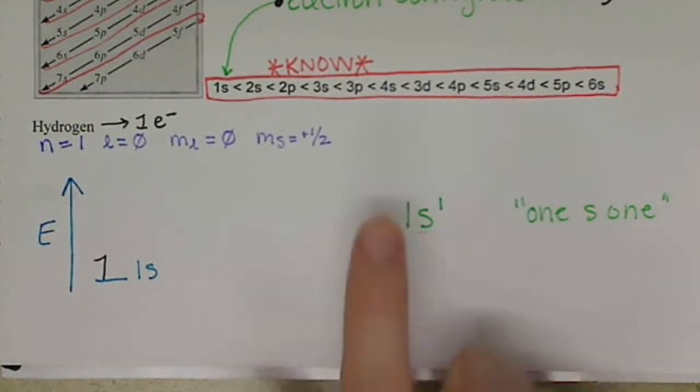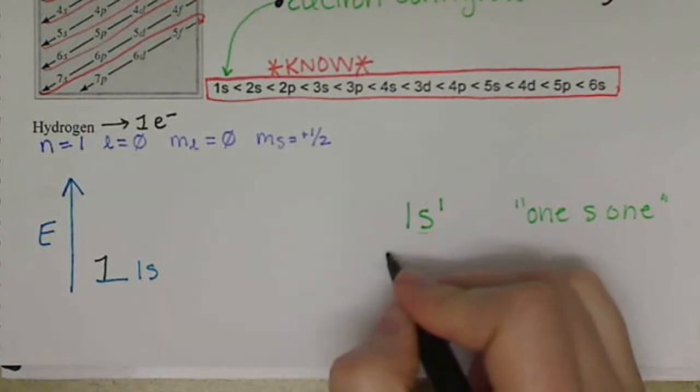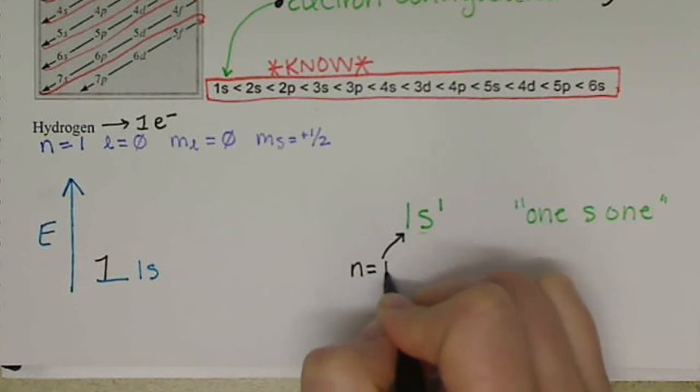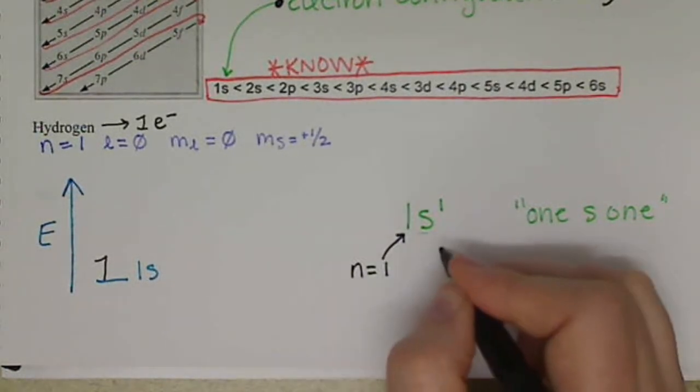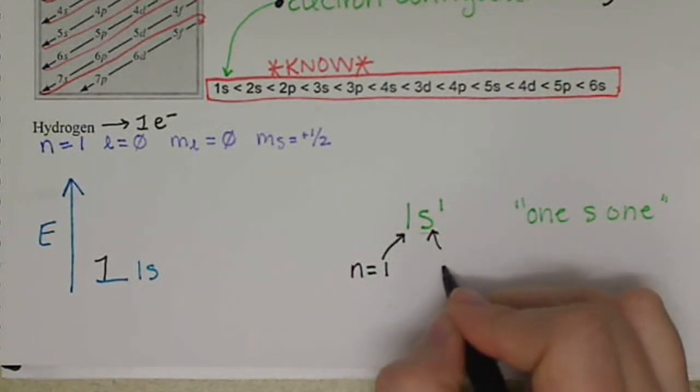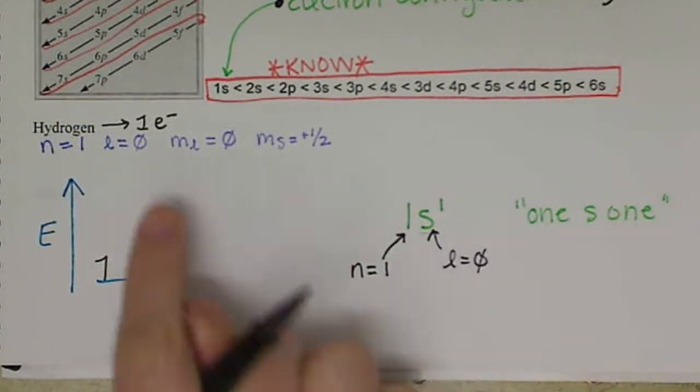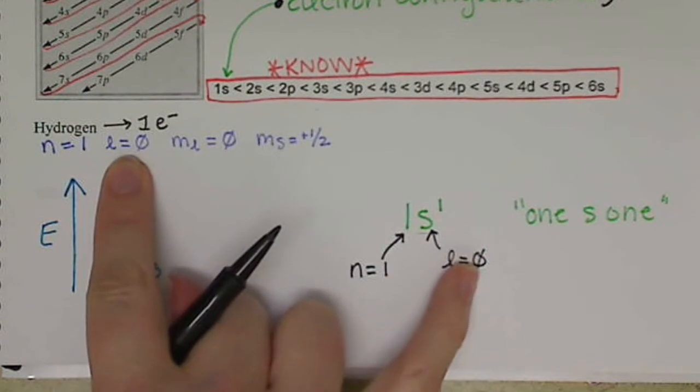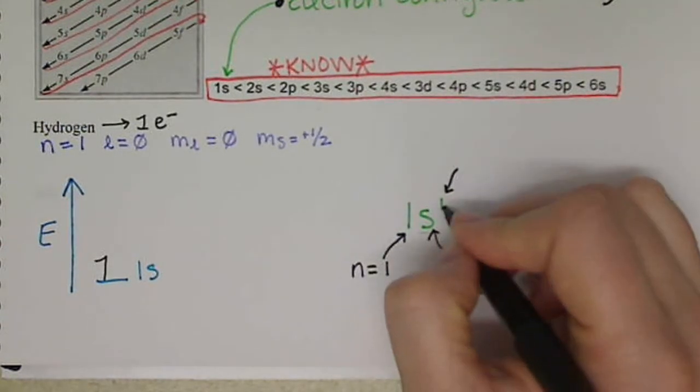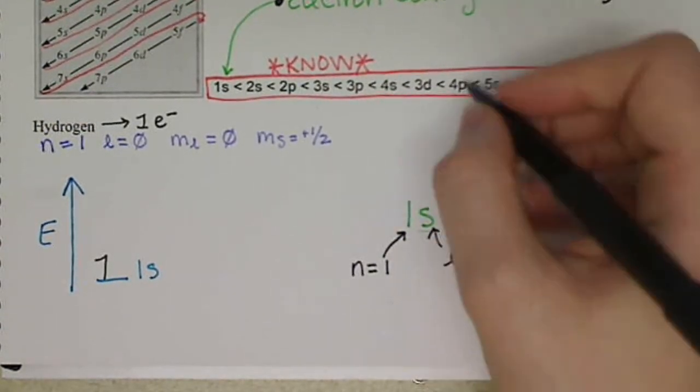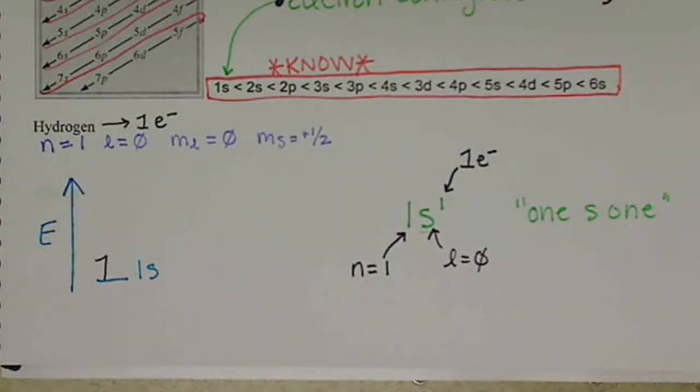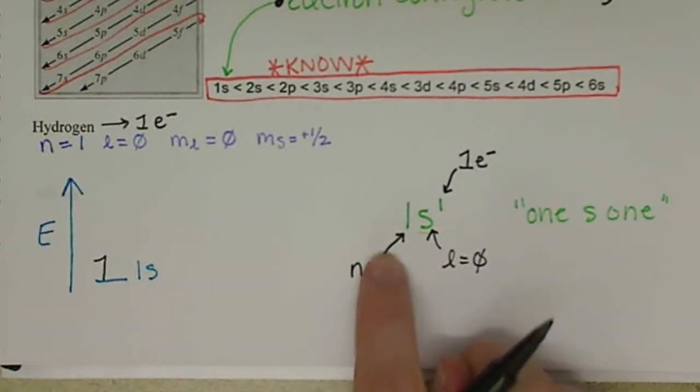Now, what do these electron configuration values mean? The 1 out in front is representing that n is equal to 1, s, so we have n equals 1. The s is representing l equals 0. And then the 1 here that's the superscript, excuse me, that's representing that we only have 1 electron in that orbital at that energy level.